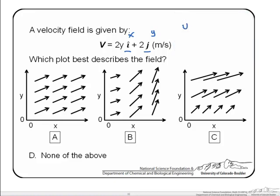So we could rewrite this as the x component of velocity is equal to 2y and the y component of velocity is equal to 2. We might as well finish this off and say that the z component is 0.